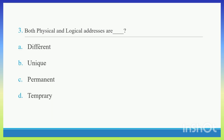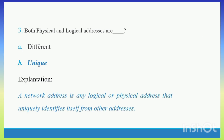Question 4. Both physical and logical addresses are. Option A: Different. Option B: Unique. Option C: Permanent. Option D: Temporary. Both physical and logical addresses are Unique. Right Answer B. Explanation: A network address is any logical or physical address that uniquely identifies itself from other addresses.